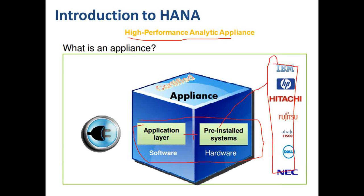SAP HANA hardware vendors include IBM, HP, Cisco, Fujitsu, Intel, and Dell. You purchase the HANA appliance software from SAP and the hardware from these partners — together it is delivered as a box. Earlier you purchased hardware and OS separately from different places; today they are delivered together — that is what an appliance means.